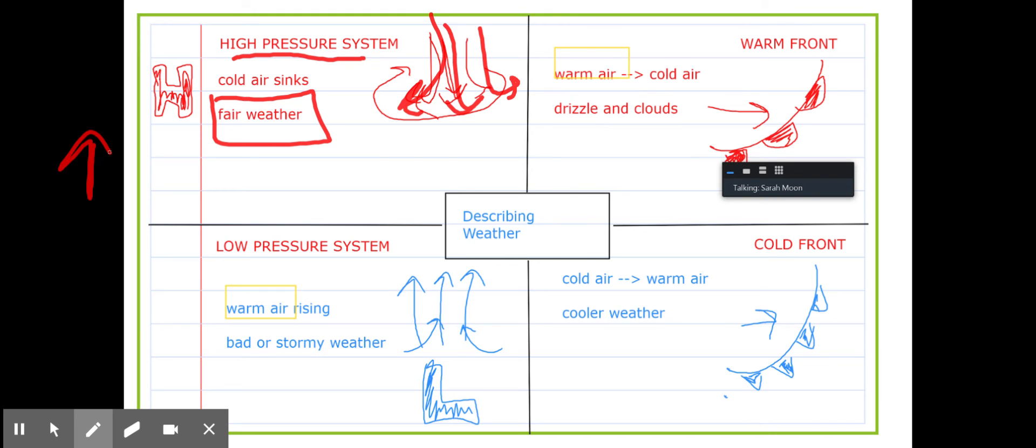With low pressure, my warm air is going up, and so I'm going to have low pressure which is bad or stormy weather. Again, my thumb would be going down to show that it's low. Thumbs down, bad weather.